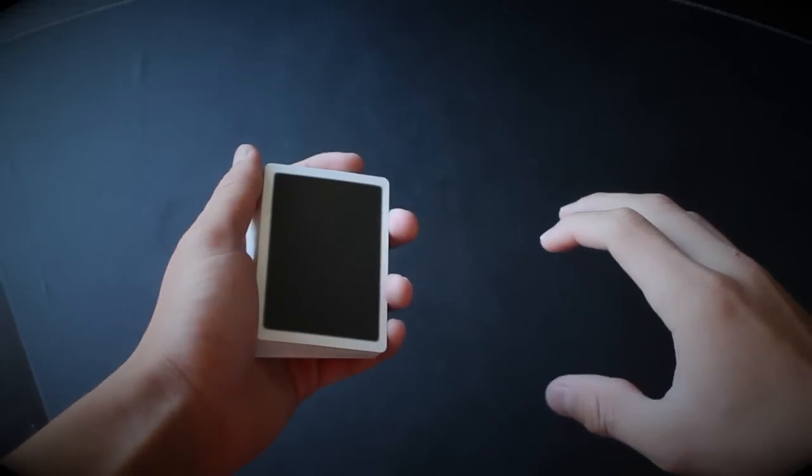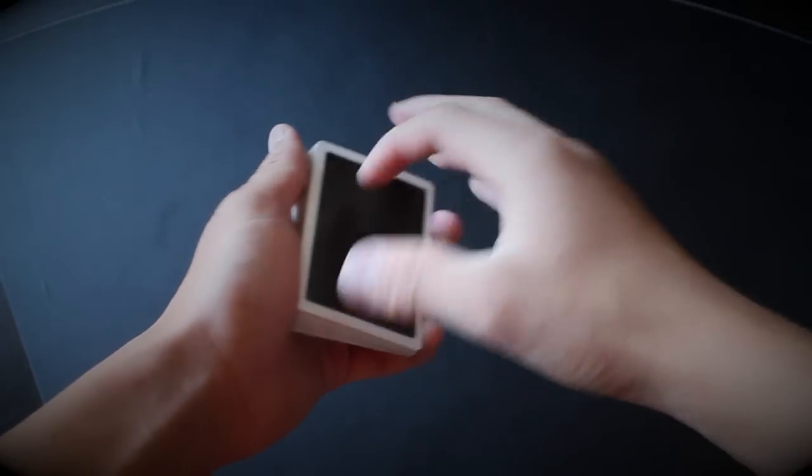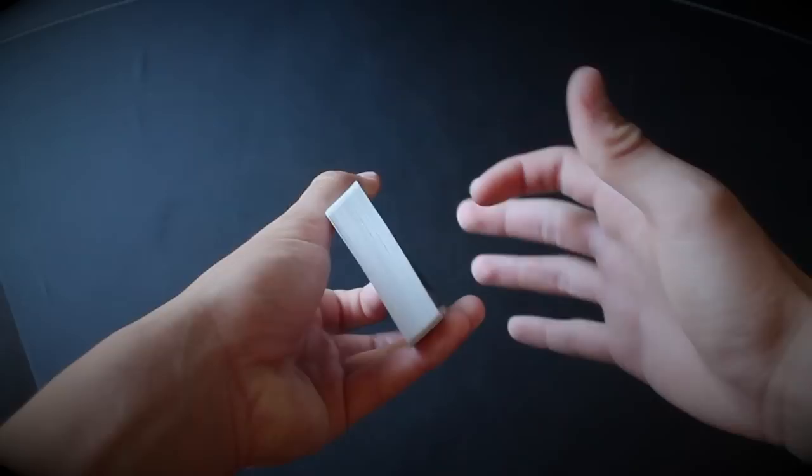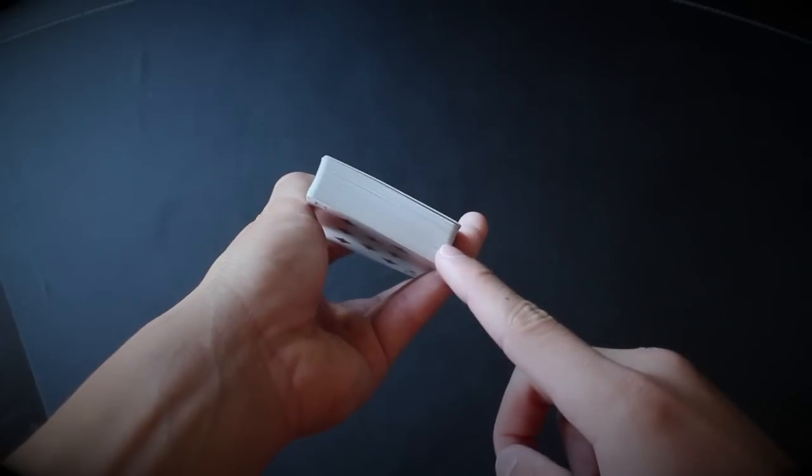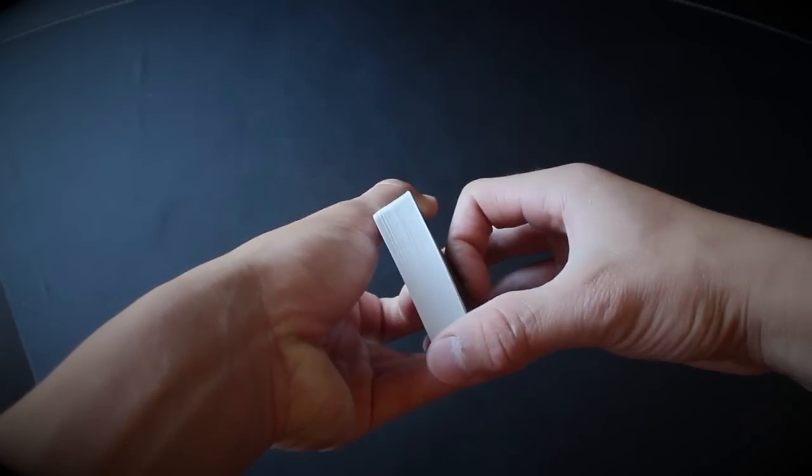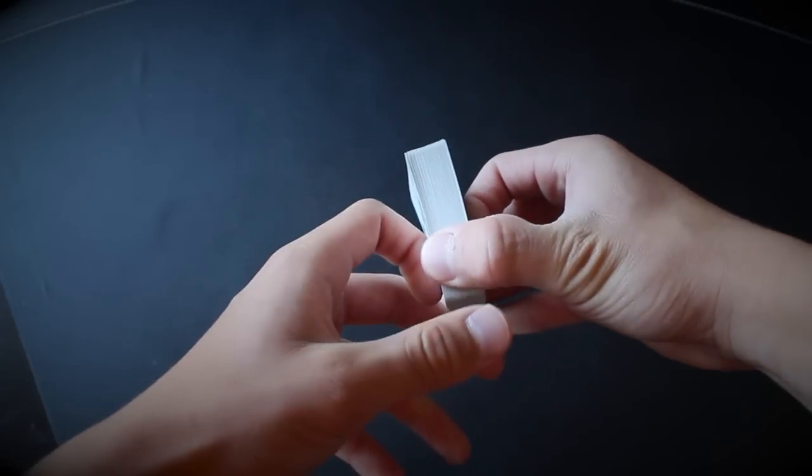First, let's start with the grip. Take your dominant hand—for me, that's my right hand—and place the thumb directly to the left of the bottom right corner of the deck. You don't want to place it on top of the corner, but directly to the left so that this edge